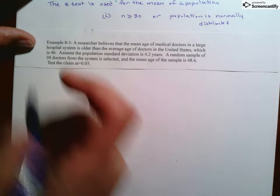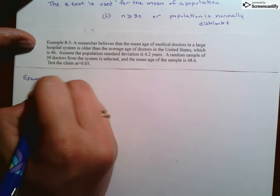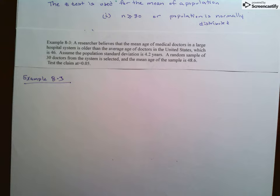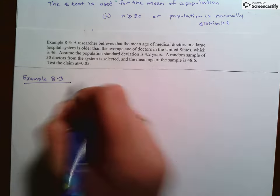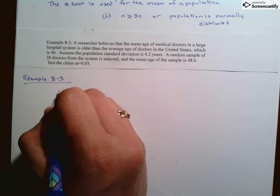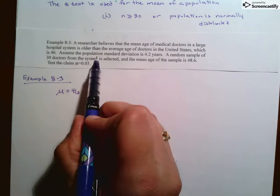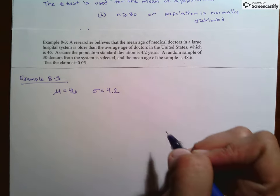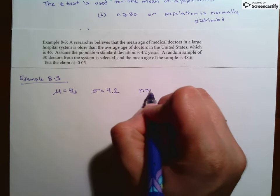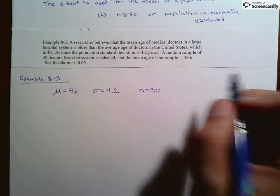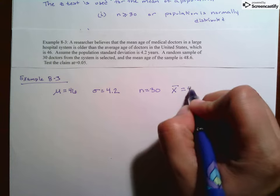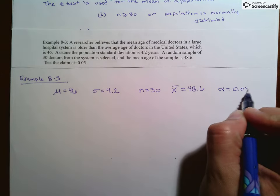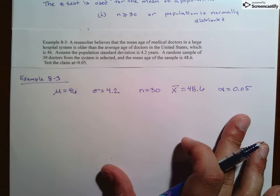This is example 8-3. So the first thing that I do before I do anything else is I write down the things that I know. The population mean is 46. Population standard deviation is 4.2. We're taking a random sample of size 30, so n equals 30. And the mean age of the sample is 48.6. And my significance level is 0.05. So I just write the things that I know from the problem.